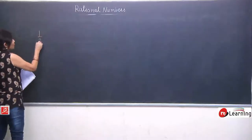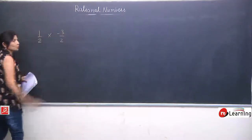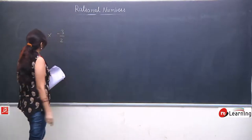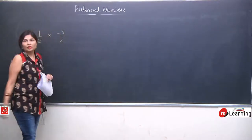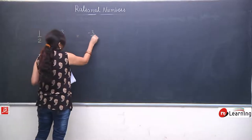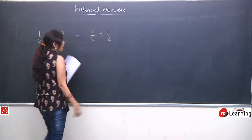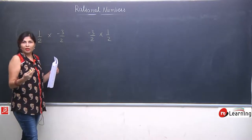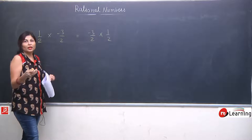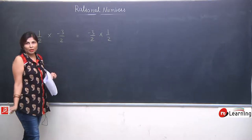I am having 1/2 and -3/2. Abhi hum commutativity multiplication ke liye bhi check kar rahe hai. Commutative property ko hum multiplication ke liye bhi check kar rahe hain — hum verify karenge LHS and RHS agar equal ho jate hain, means we can say that commutative law for multiplication is applicable.